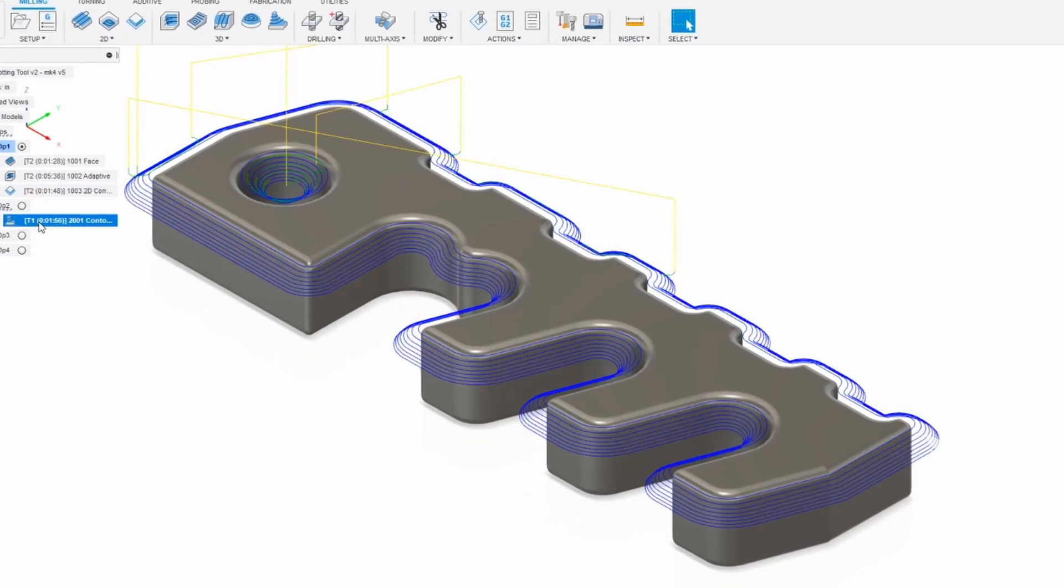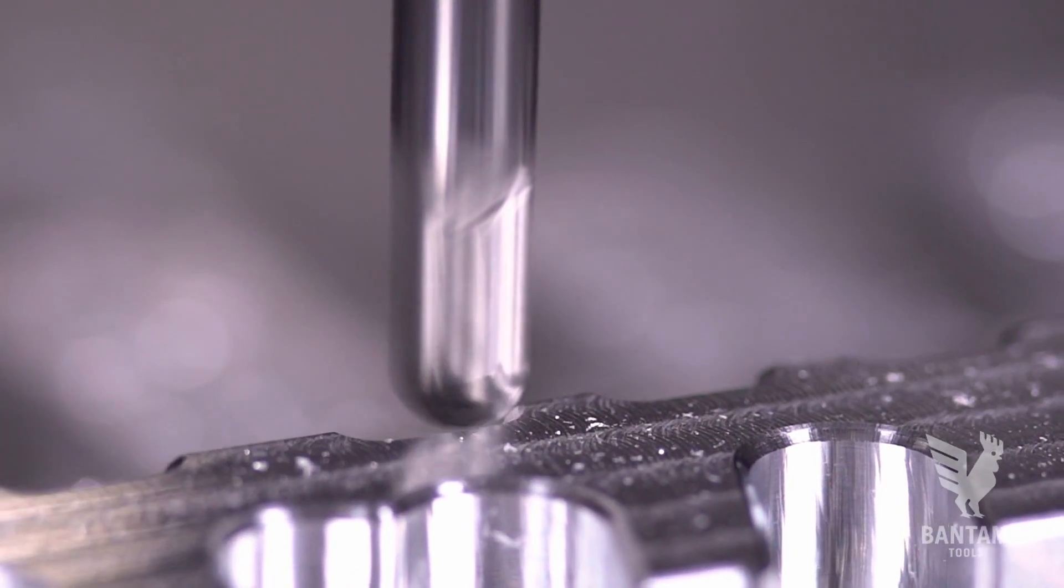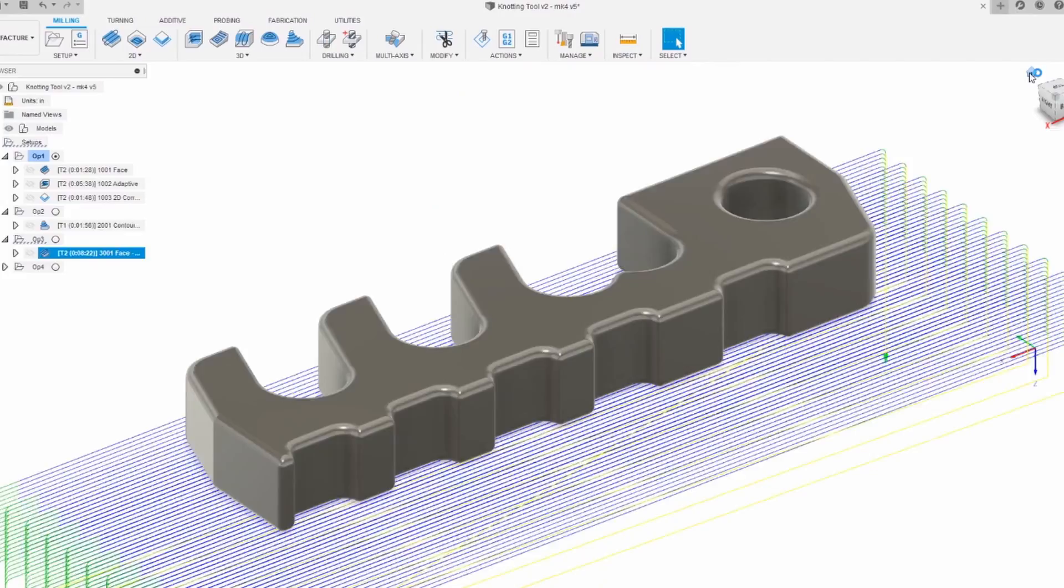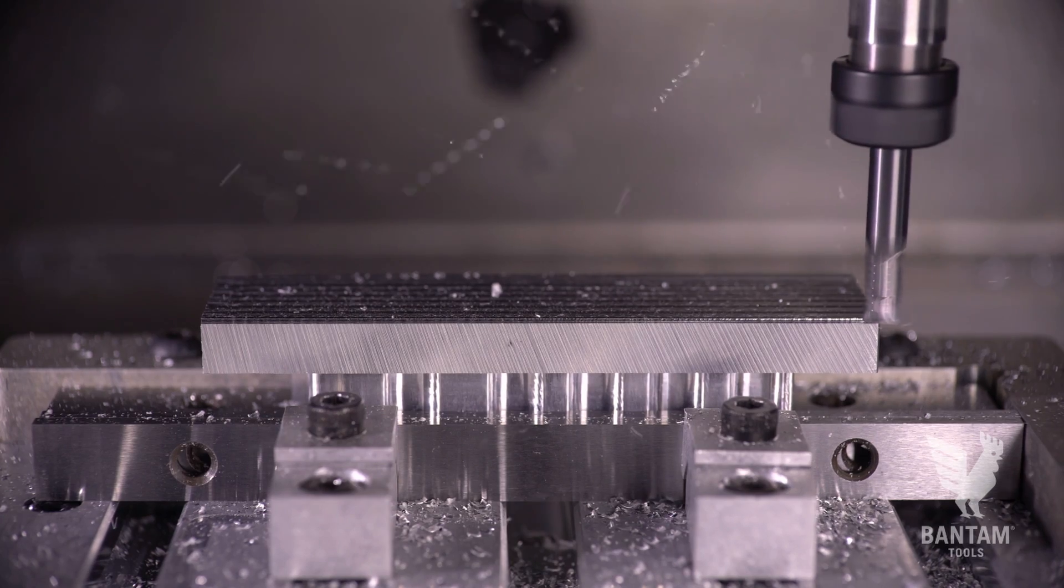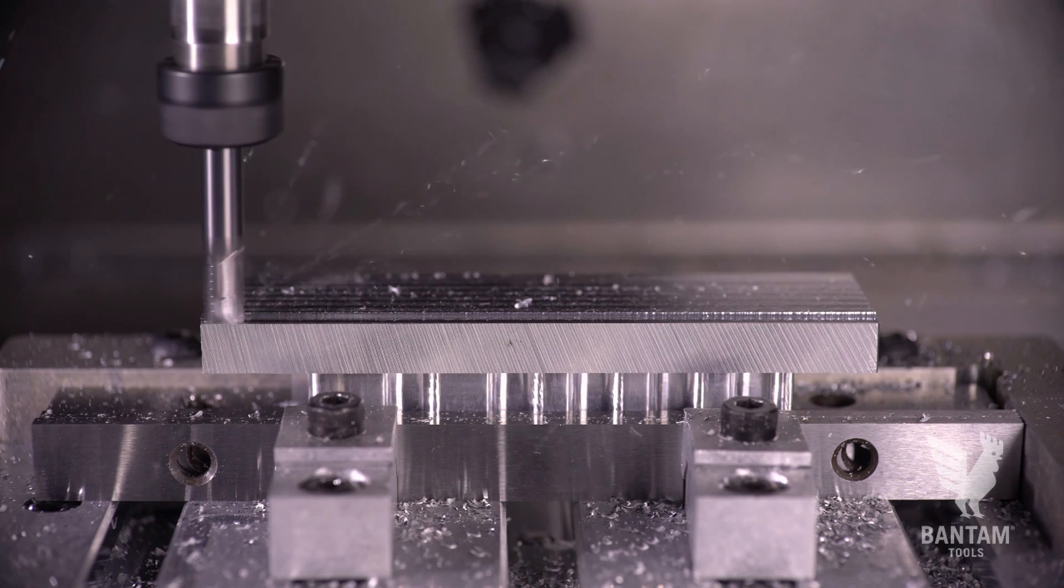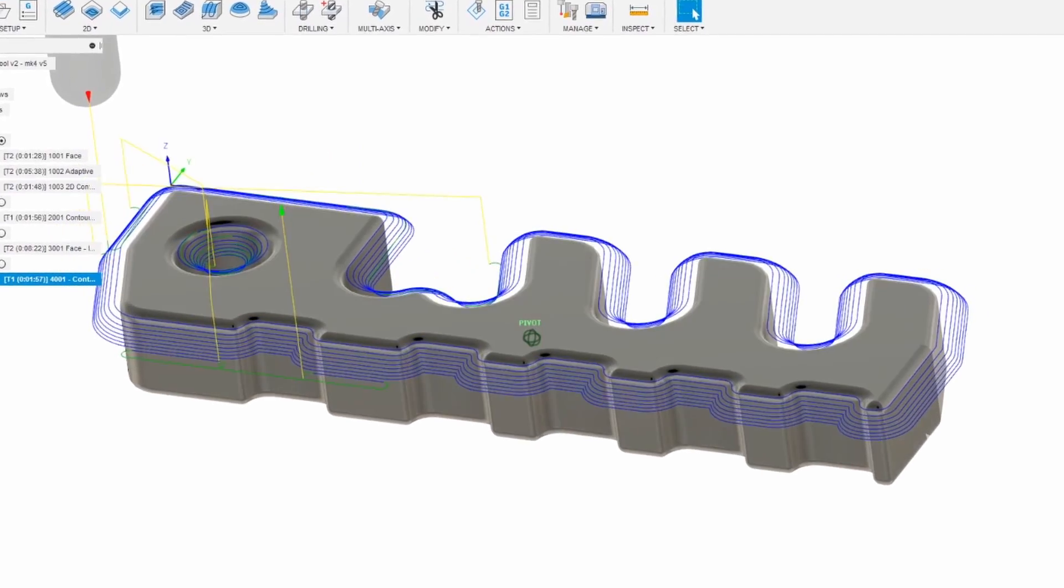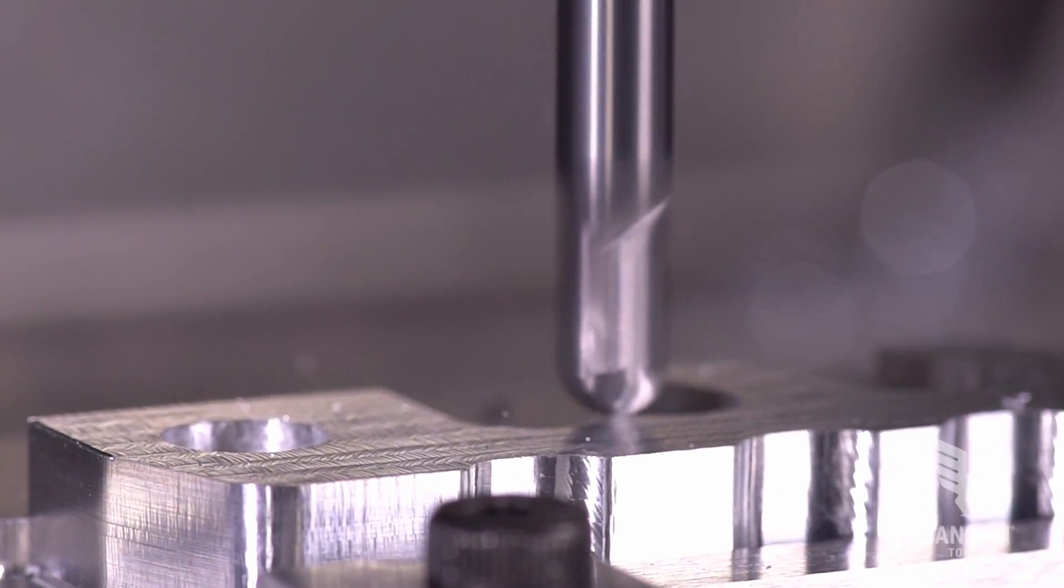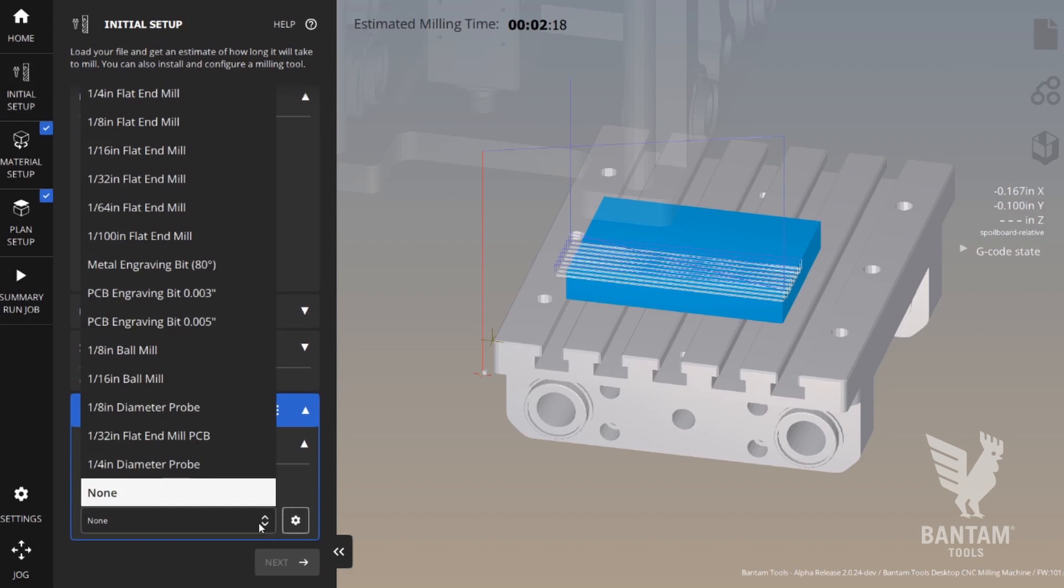In our second operation, we'll swap in our ball end mill and machine a 3D toolpath to create the filleted edge. In our third operation, we'll flip the part and face down the hat or leftover stock. And in our fourth operation, we'll again use a ball end mill to machine the fillet.